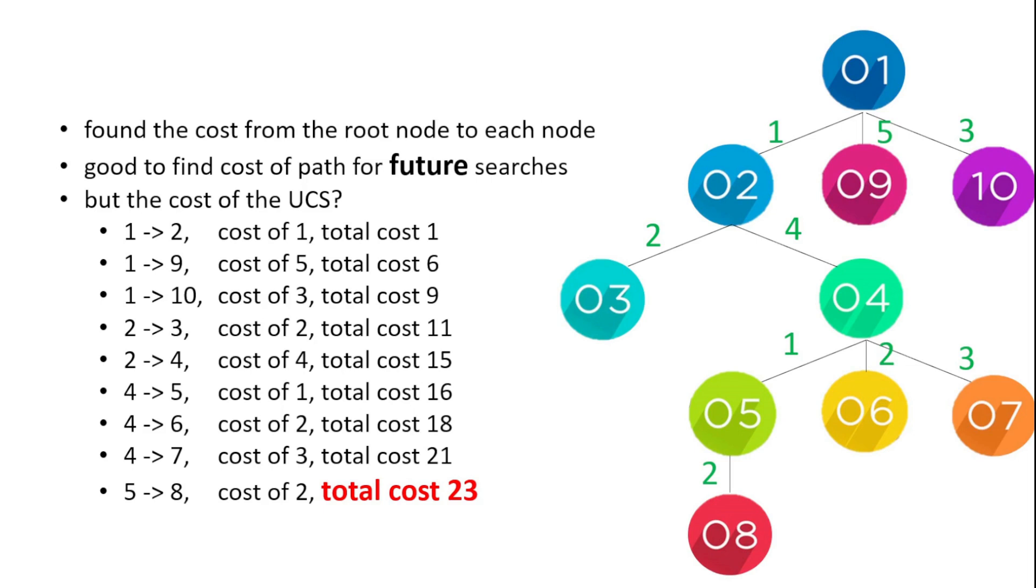In fact, with these costs, the total will be 23 because we visited each node in our tree. So that's good to find the path for future searches, not so good if we're actually doing it at the time.